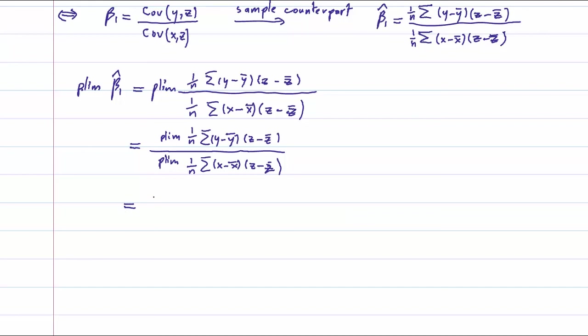This is covariance of y and z over covariance x and z, which is beta one, as we showed before.